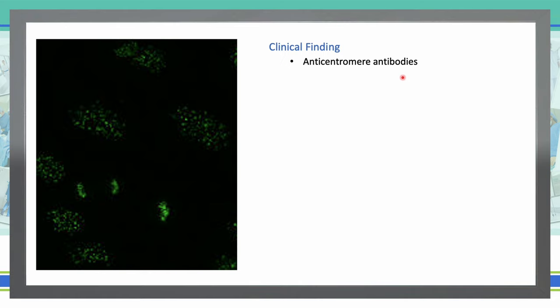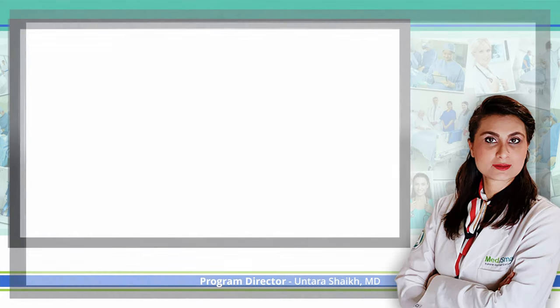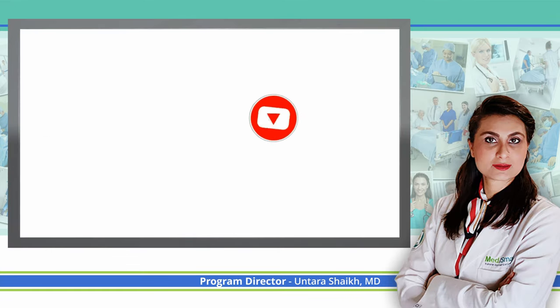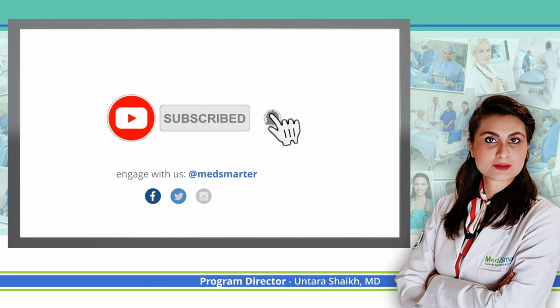Anticentromere antibodies are autoantibodies specific to the centromere. They occur in autoimmune diseases. Where do we see that? In scleroderma CREST syndrome. Thank you everyone — I hope this video was a source of information for you.